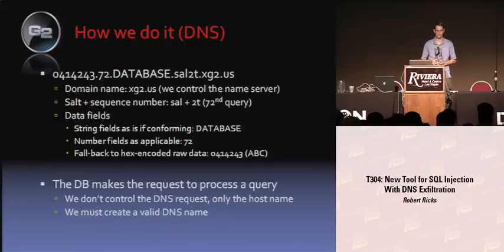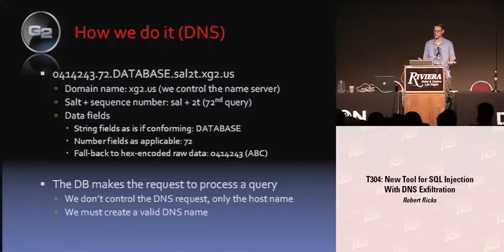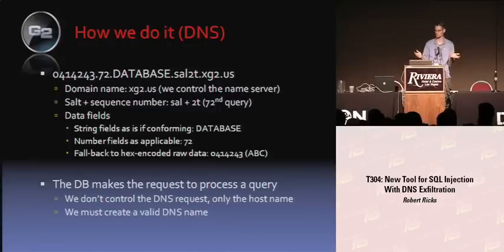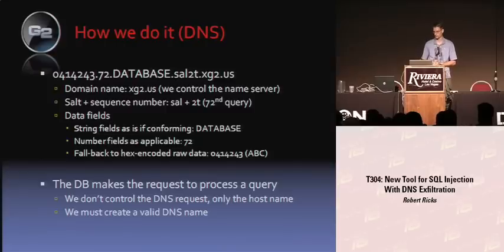The DNS exfiltration part isn't just slapping data into DNS. You have to remember that the database is making the request, so the database has to think it's a valid DNS request or it won't make it. As an example of what comes back: '0414243' is hex data. You can encode numbers and strings. We also include characters to verify this is a request we sent out and that we're not receiving it out of order. Then you have your domain name on the end so it resolves back to your computer.